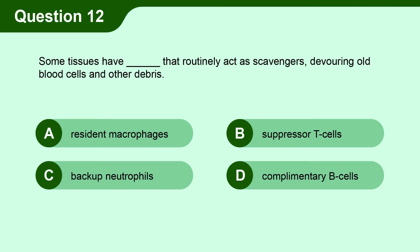Question 12. Some tissues have blank that routinely act as scavengers, devouring old blood cells and other debris. A. Resident macrophages. B. Suppressor T-cells. C. Backup neutrophils. D. Complementary B-cells.